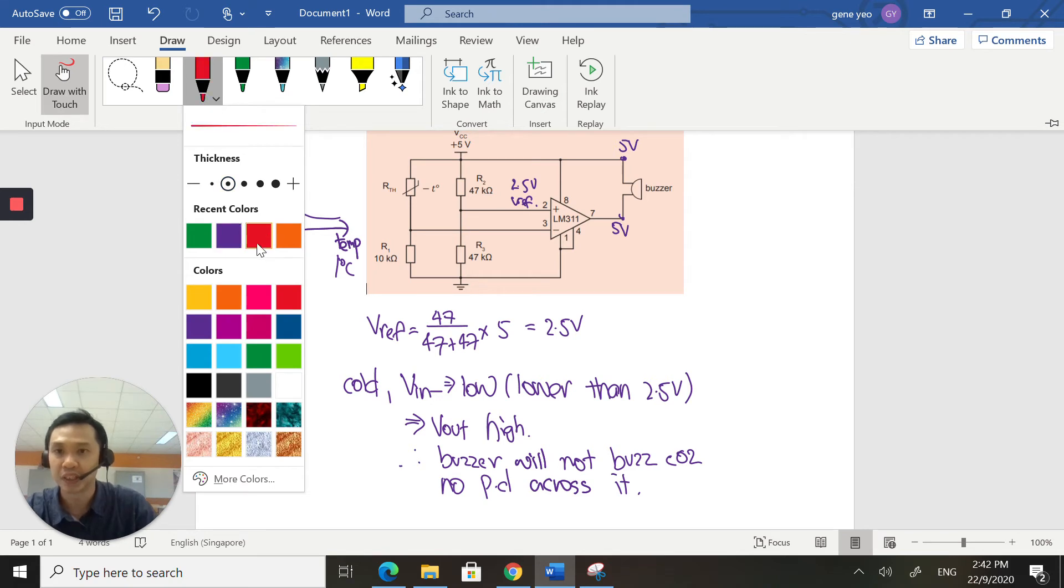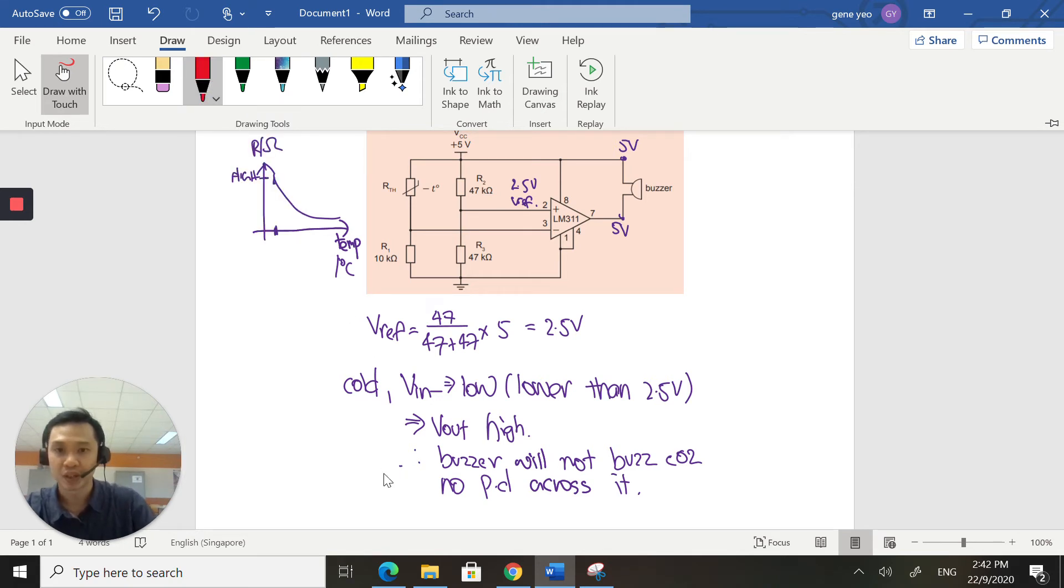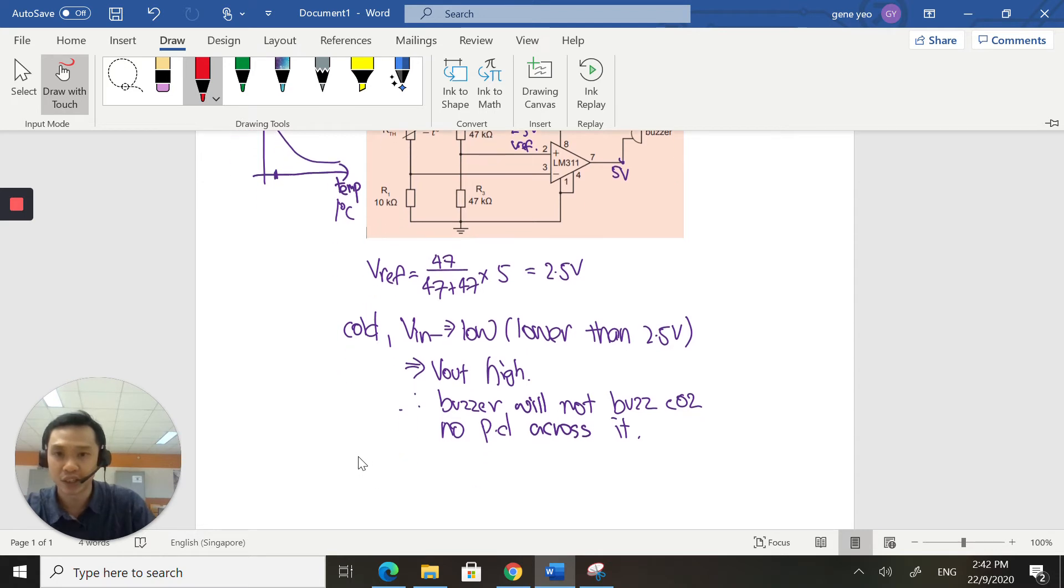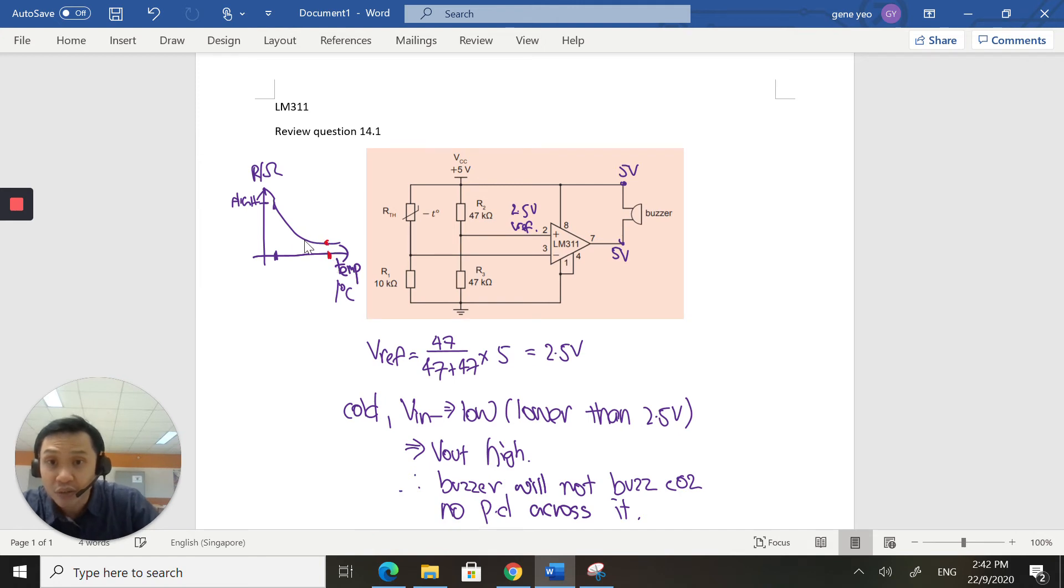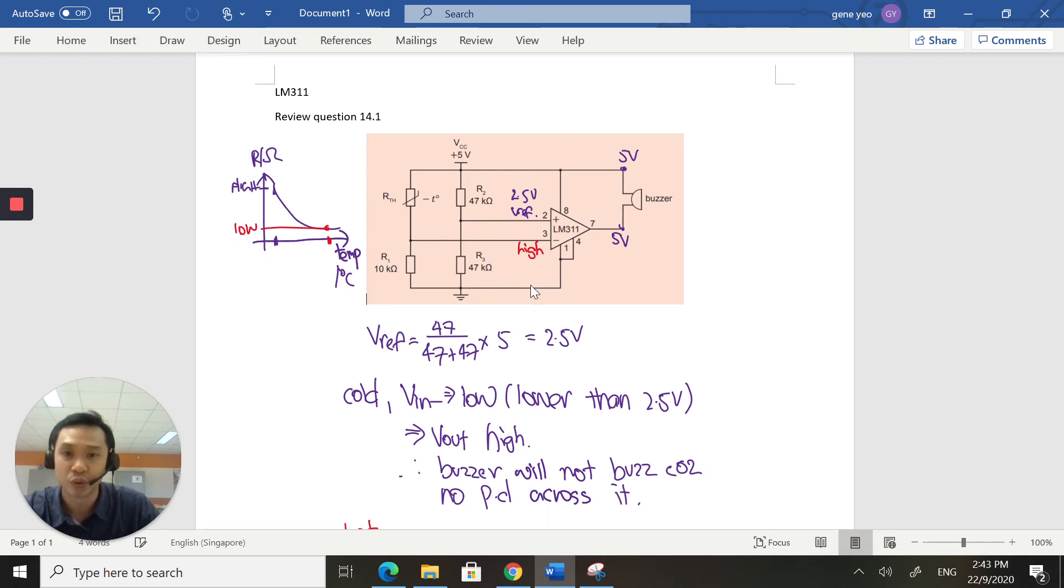Let's take a look at what happens when it is very hot. When I have a high temperature, the resistance across the thermistor is very low. Therefore, it will take very little voltage across it and most of the voltage will be left for R1. If there's a high voltage here, therefore the signal going into my inverting terminal will be a high voltage.